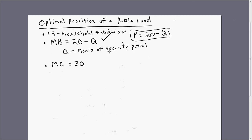Q is going to represent hours of security patrol over some time period, let's say per month. And there is a cost of providing security patrol, we have to hire people to do that, and let's say that runs $30 an hour.